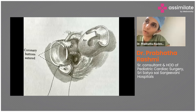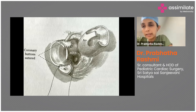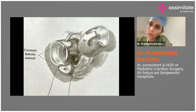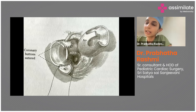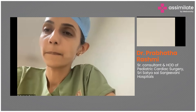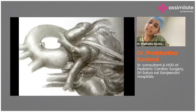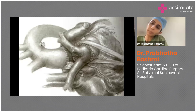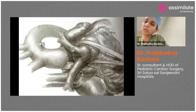The coronary buttons are sutured into the main pulmonary artery. The aorta is then brought posteriorly and the pulmonary artery is brought anteriorly, sutured to the pulmonary stump — completing the great vessel switch.